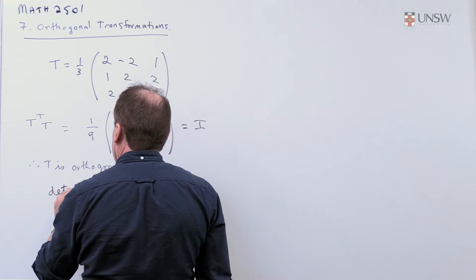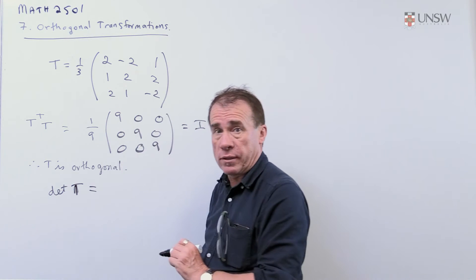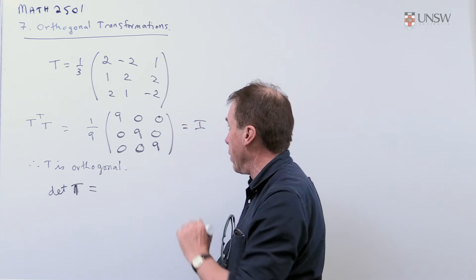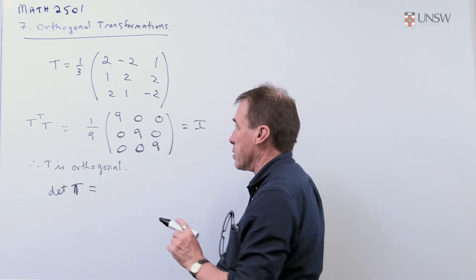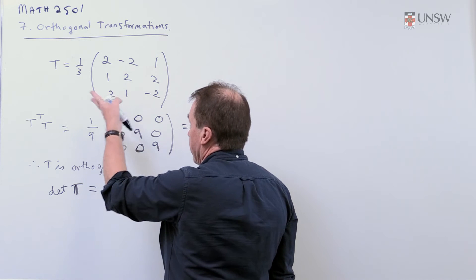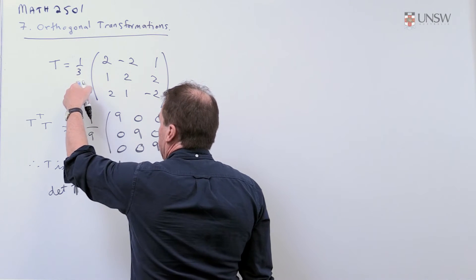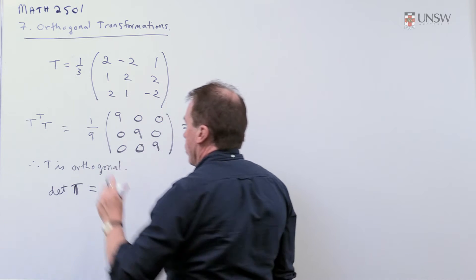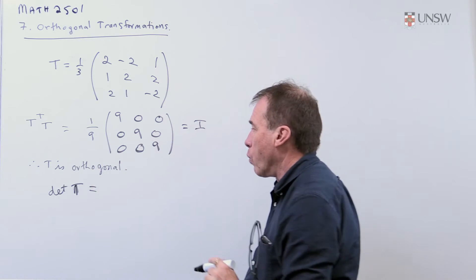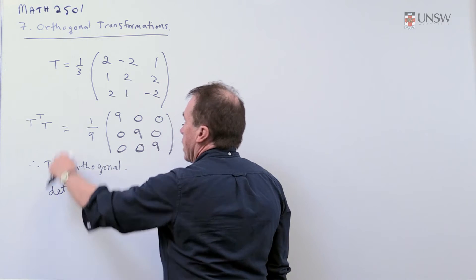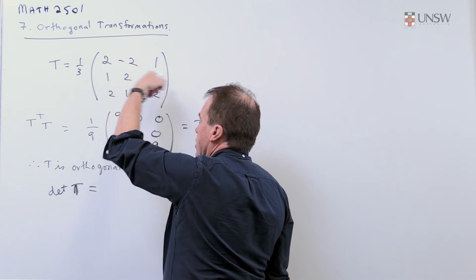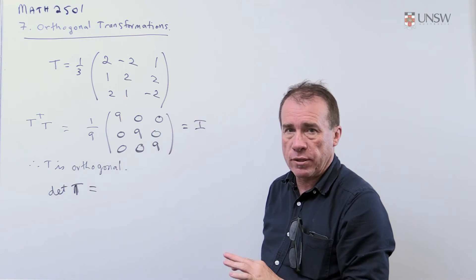Now here you really have to do some work to convince yourself and the marker that you have got the correct answer because it's not immediately obvious which one of these it's going to be. Now be careful with this one-third here because when I get the determinant of this, this one-third is affecting each of the three rows of the matrix.